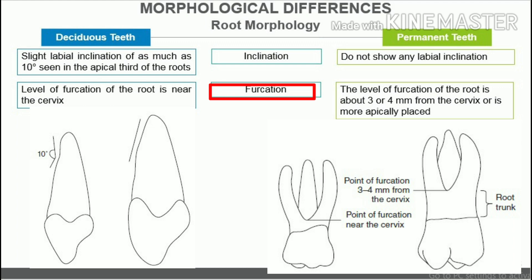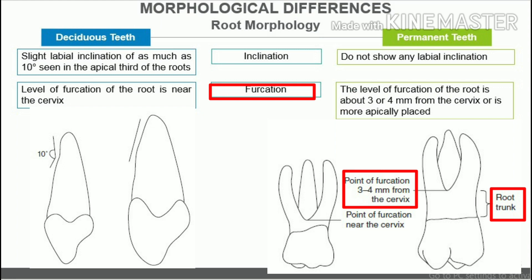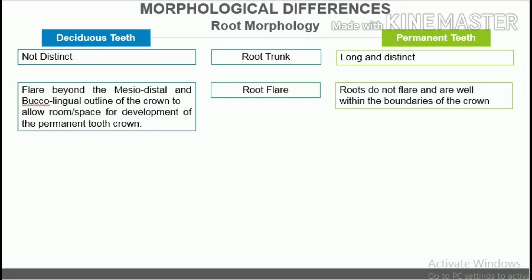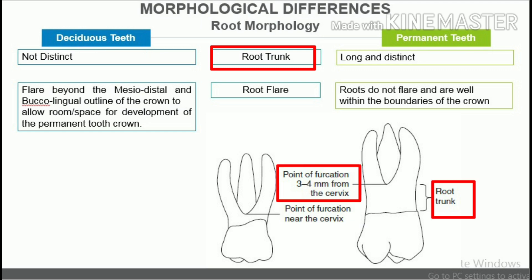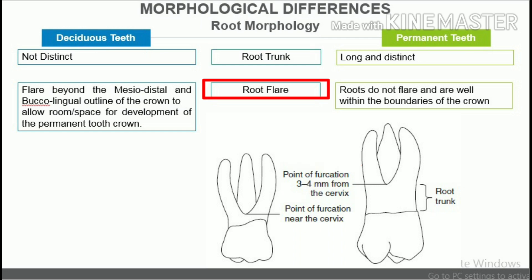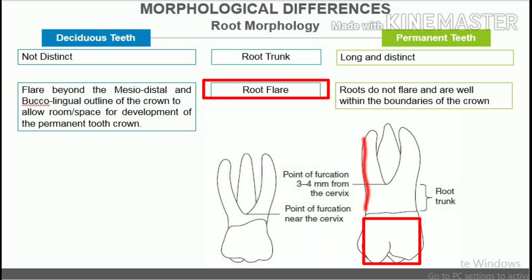Furcation. The level of furcation of the root is near the cervix in deciduous molars. In permanent teeth, the level of furcation is about 3 or 4 mm from the cervix, or is more apically placed. Root trunk. Since the level of furcation is very close to the cervix in deciduous teeth, the root trunk is not distinct. In permanent teeth, the root trunk is long and distinct. Root flare. The roots of deciduous molars flare beyond the mesiodistal and buccolingual outline of the crown to allow space for development of the permanent tooth crown. In permanent teeth, the roots do not flare and are well within the boundaries of the crown.